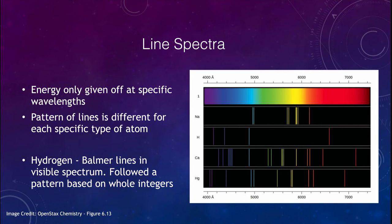Now when we look at spectra, we looked at the continuous spectrum, which was the black body spectrum. But we also get line spectra or bright line spectrum, where energy is given off only at very specific wavelengths. The pattern that we see is different for every single atom.